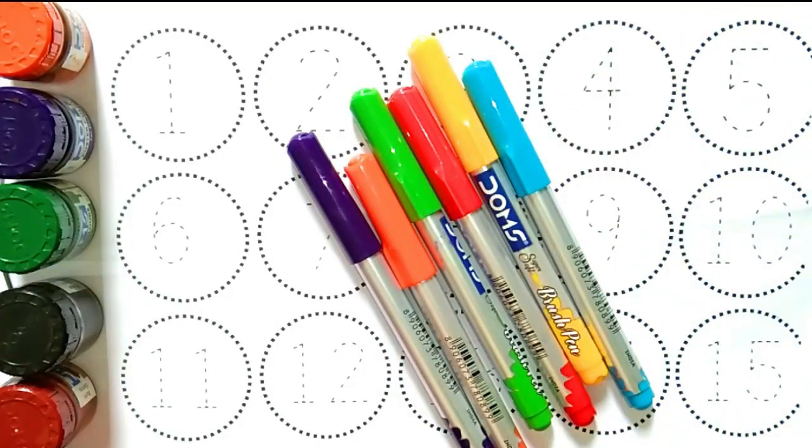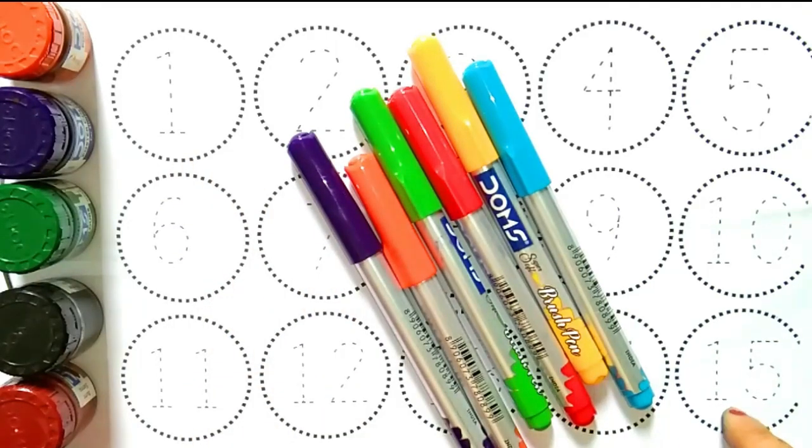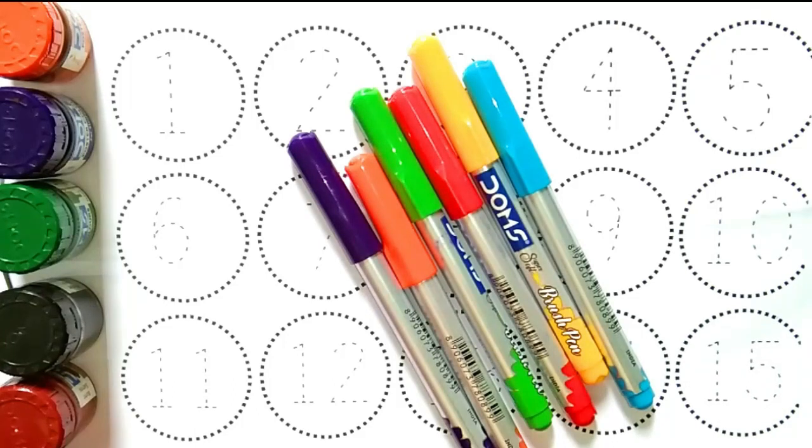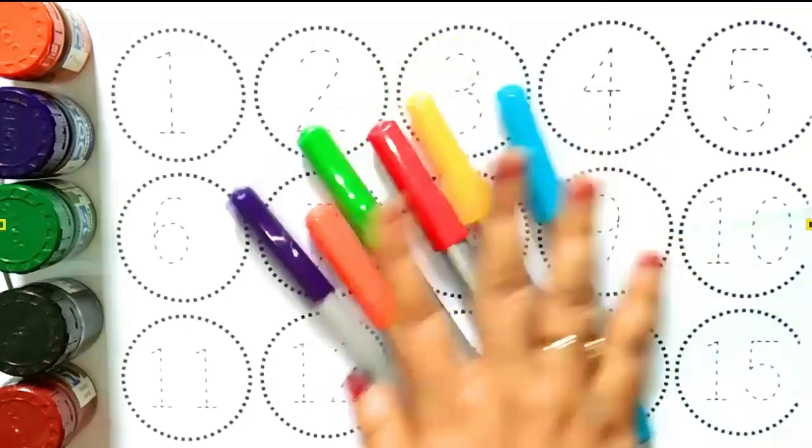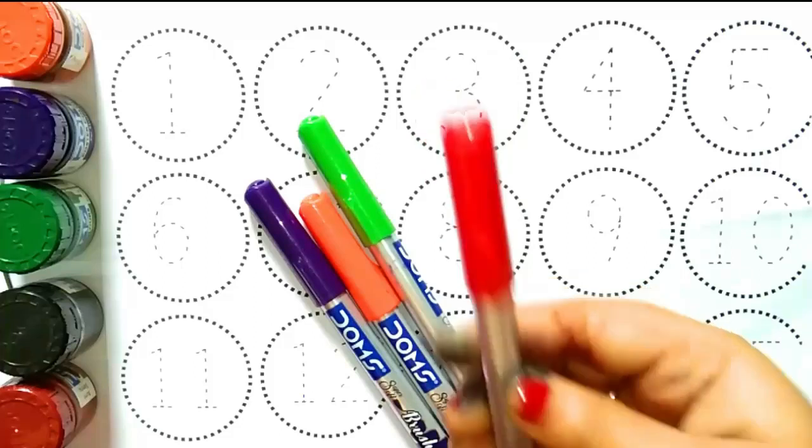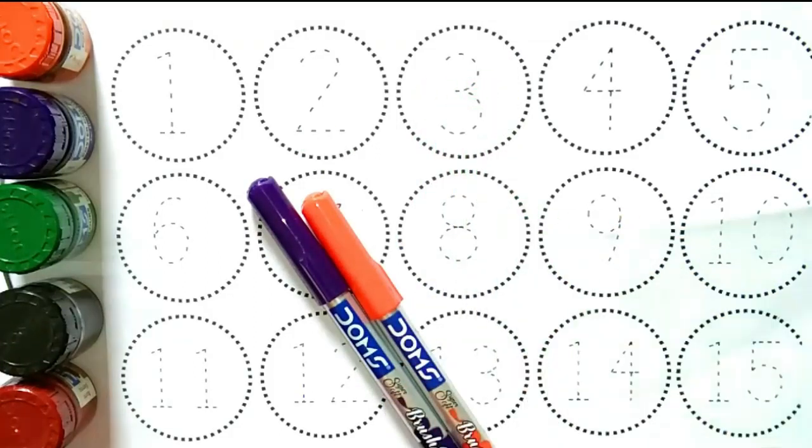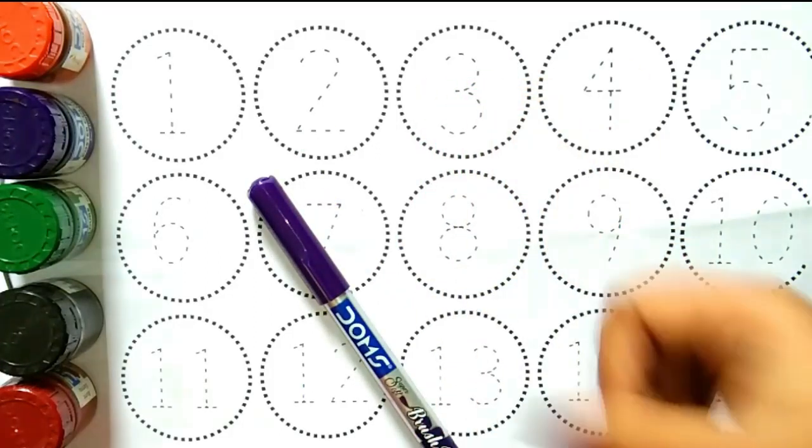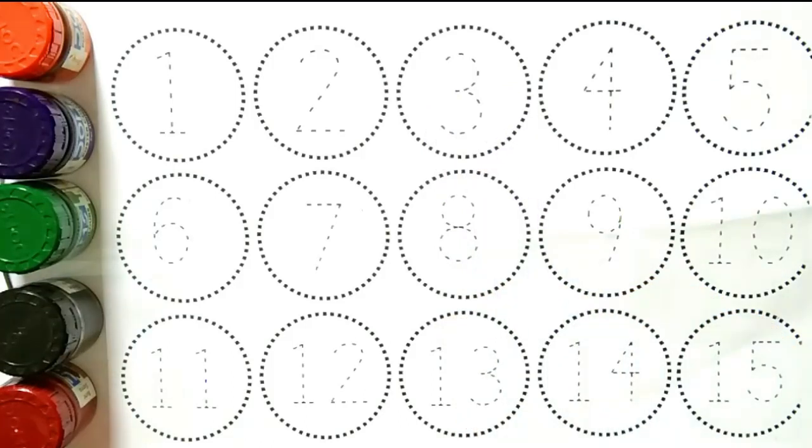Hello kids, welcome to my channel. Aaj hum sikhne aur padhne wale hain 1 to 15 numbers counting. Toh chaliye video ko shuru karte hain. Pehle hum jaan lete hain colors name. Yellow color, red color, light green color, orange color, purple color. Toh chaliye video ko shuru karte hain.